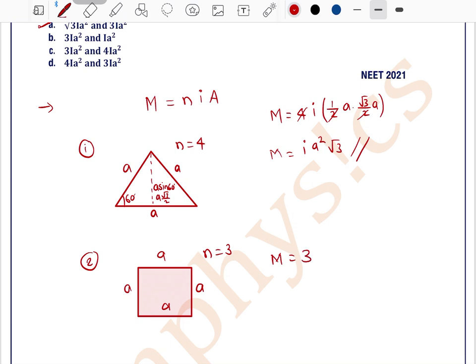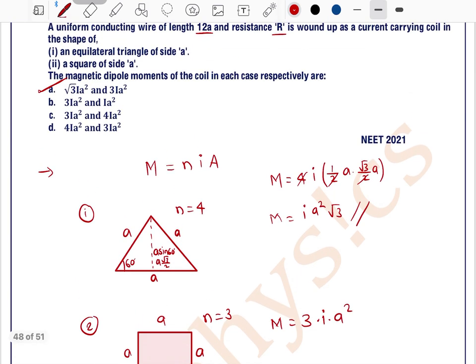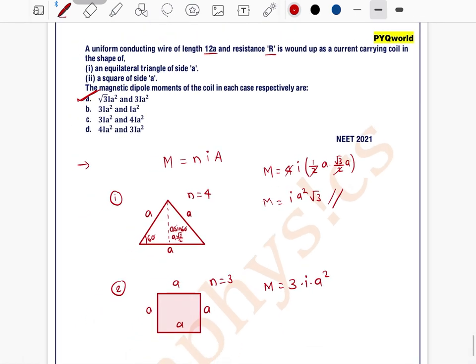So magnetic moment is equal to N - N is 3, I is I, and area is A square. So 3I A square means again option A is the correct one.